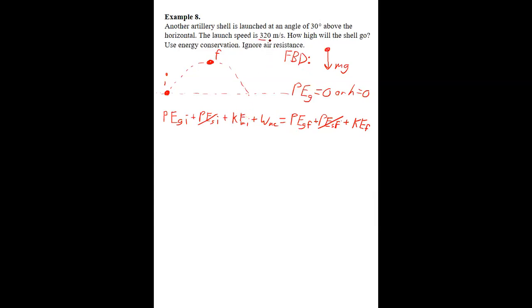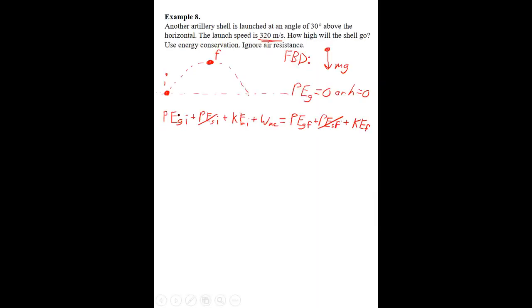Kinetic energy initial, well it definitely has some. It was launched at that speed, but it doesn't have any gravitational potential energy at the beginning because the initial state is right at our initial height. We can choose any height we want to be where this is true, where the gravitational potential energy is zero, and we chose it to be here. Always makes sense to choose the lower of the two points, initial and final.